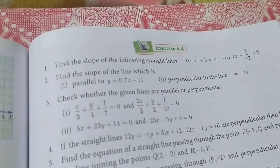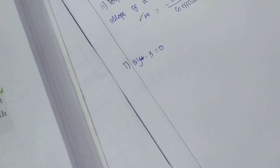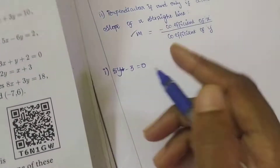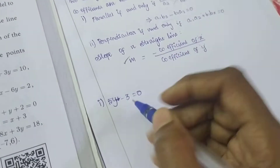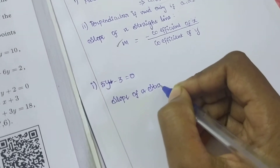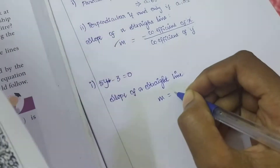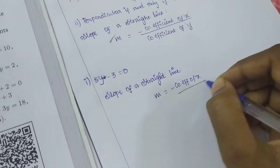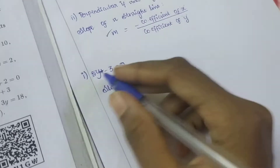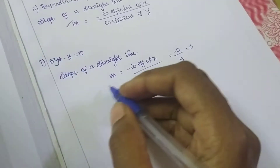First question: find the slope of the following straight lines. First: 5y minus 3 equal to 0. We are going to find the slope. Using the formula m equals minus coefficient of x divided by coefficient of y — the coefficient of x here is 0, so m equals 0 divided by 5. Zero divided by any number is 0. So m equals 0.